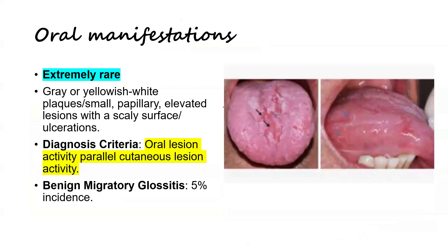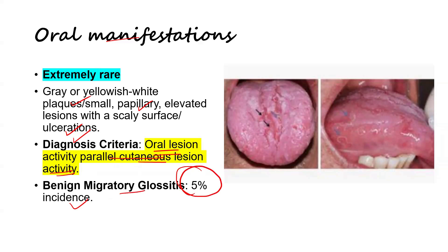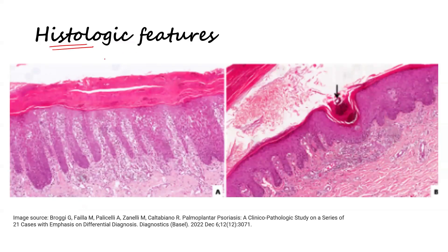Oral manifestations are extremely rare. If psoriasis appears in the oral cavity, it may present as yellowish-white patches, papillary elevated lesions, or ulcerations. An important diagnostic criterion is that oral lesion activity should parallel cutaneous lesion activity — if the patient has active skin disease, oral lesions can be diagnosed as oral psoriasis. There is also a high prevalence of benign migratory glossitis in patients with psoriasis, with incidence up to 5%.